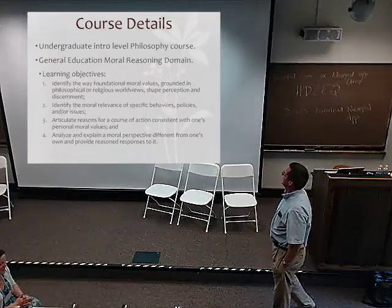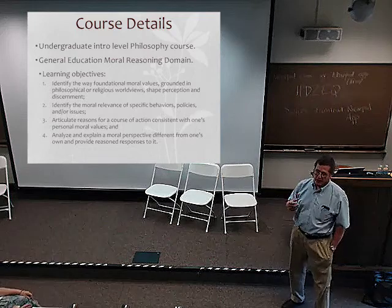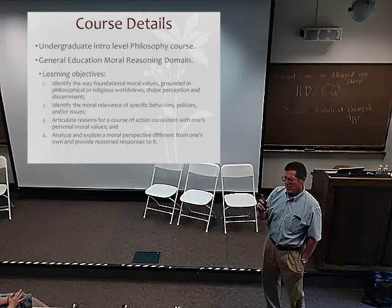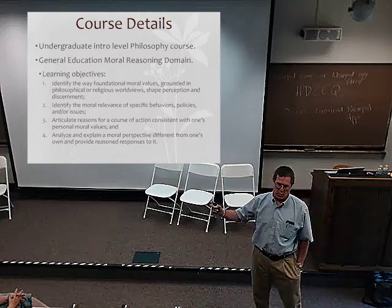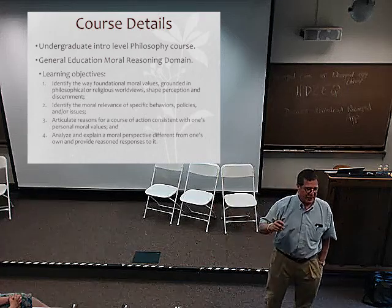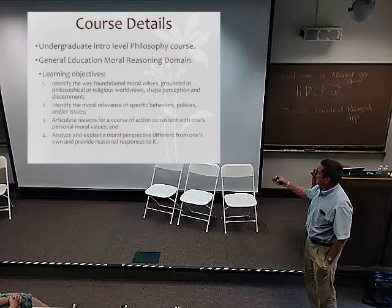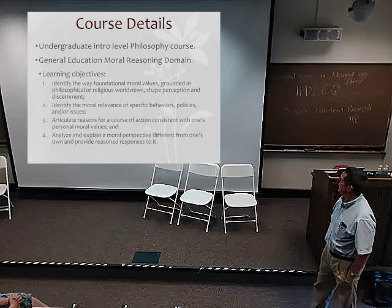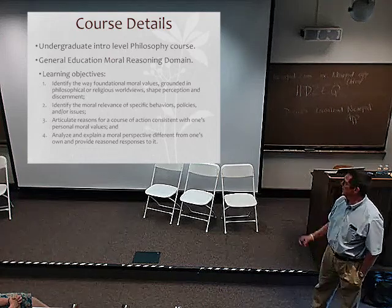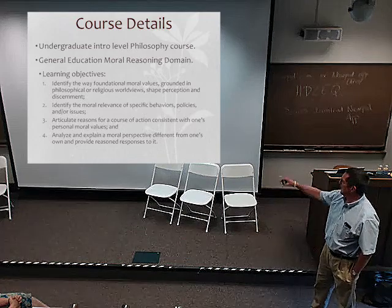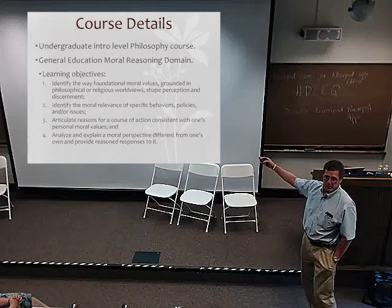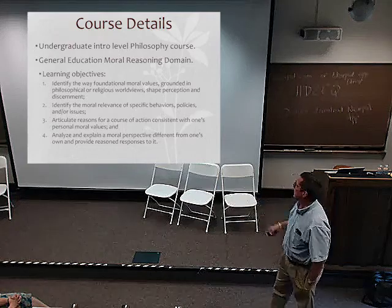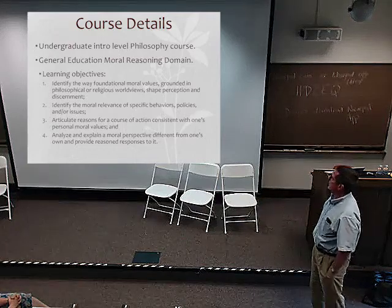This course is an undergraduate level intro philosophy course, a 100-level course, typically freshmen and sophomores. We have general education domains and students have to take two courses in two domains, and this is the moral reasoning domain. The learning objectives have to do with understanding foundational moral values, identifying specific behaviors related to those values, and being able to make an argument articulating a reason for a particular course of action, but also articulating a counterargument and responding to it.